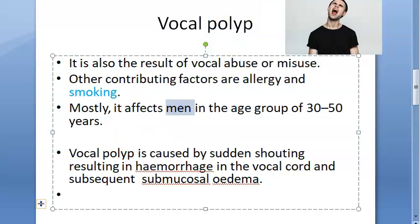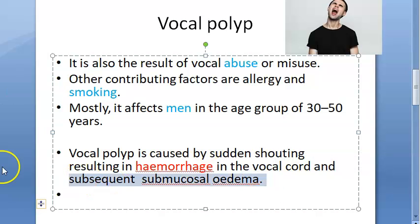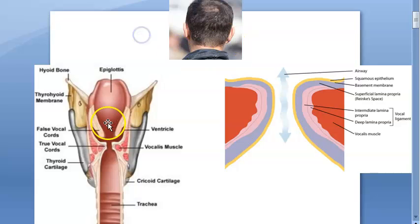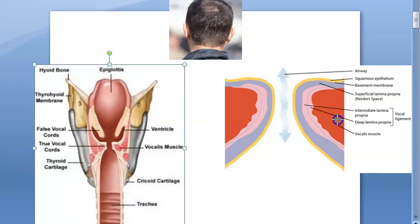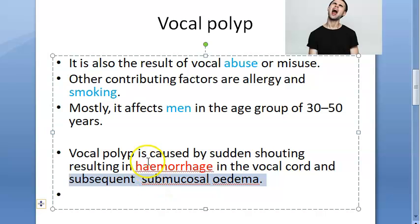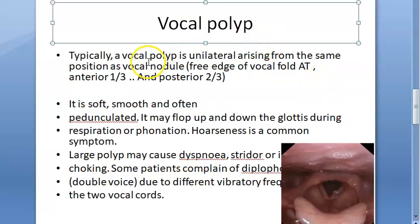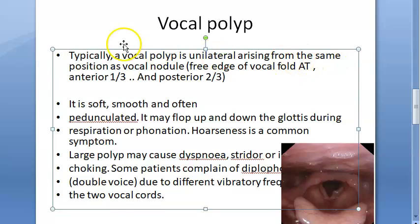Vocal abuse or misuse — specifically sudden shouting — results in hemorrhage, that is bleeding, in the vocal cord, followed by submucosal edema. Because of this hemorrhage and submucosal edema, the person will develop a vocal polyp. The vocal polyp is unilateral, arising from the same position as the vocal nodule.